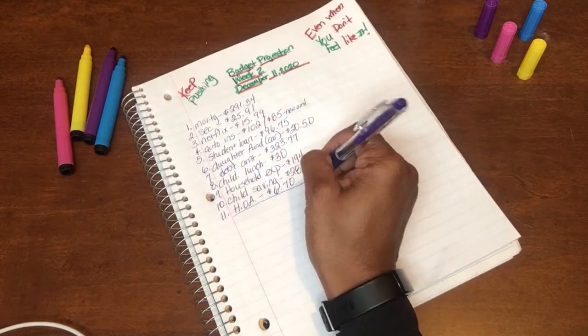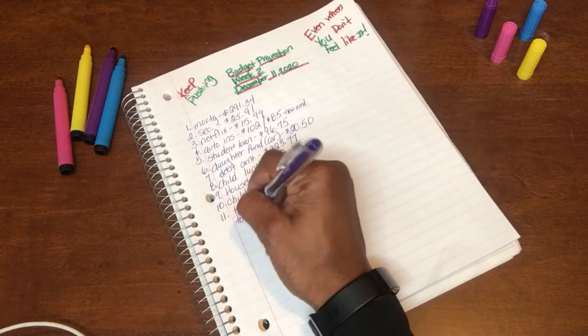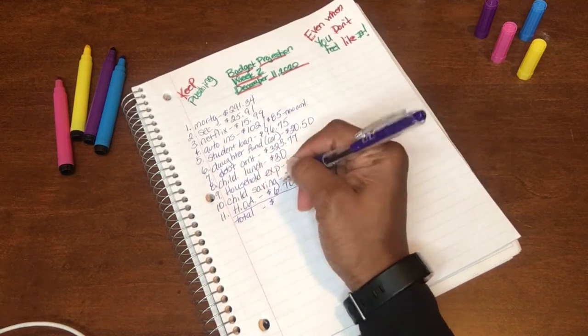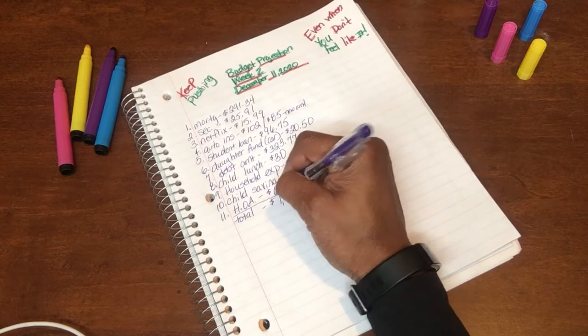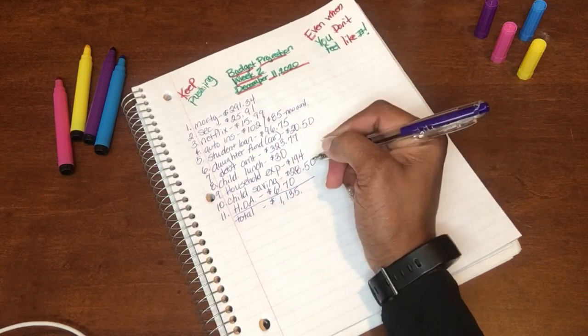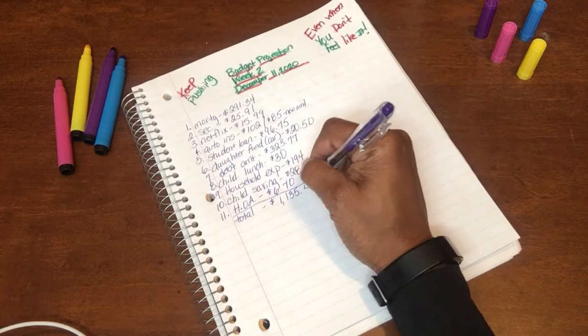Children's savings accounts get $28.50 this week. And last but not least is my HOA fees where I will set aside $6.70. So that is all I have for this week. The total for this week is going to be $1,135.46.